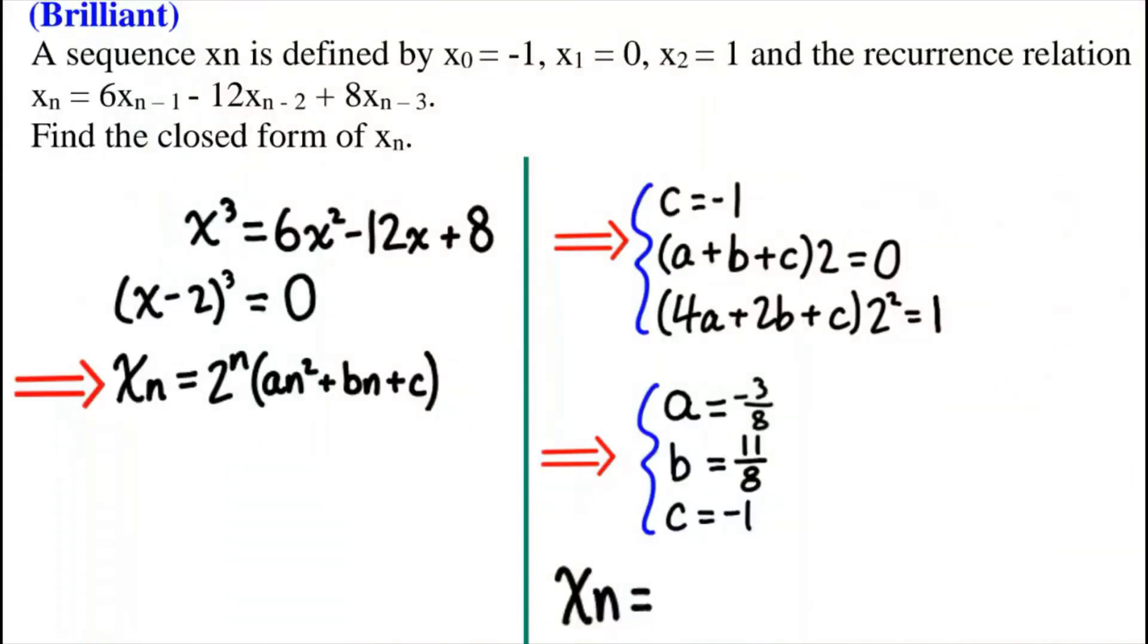Today we're going to be talking about this problem from Brilliant. A sequence xn is defined by x0 equals negative 1, x1 equals 0, and x2 equals 1.